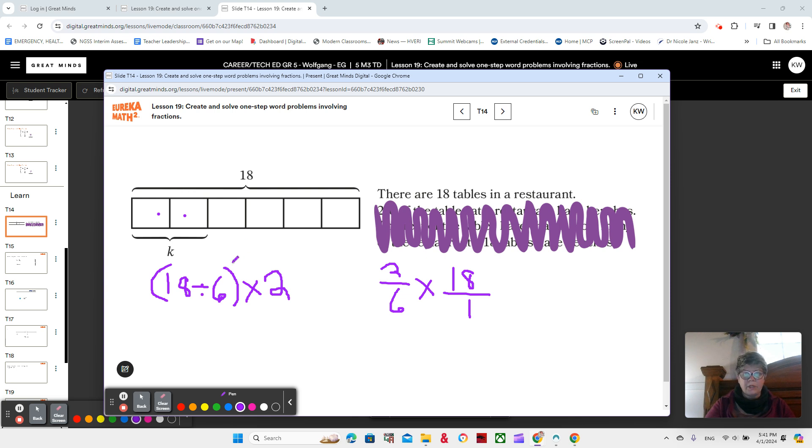And there's one more way. 18 sixths, which is 18 divided by 6, times 2, or times 2 over 1, if that helps you, because we want 2 of those.